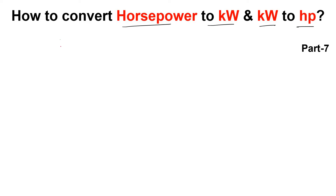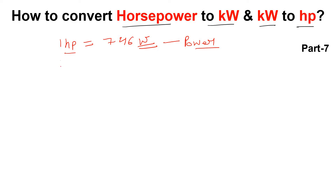As we know, one horsepower is equal to 746 watts. Horsepower is a unit of power. We also know that 1 kilowatt is equal to 1000 watts. Now let's see the relationship between horsepower and kilowatt.